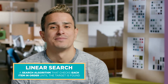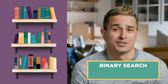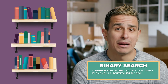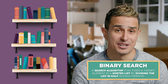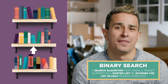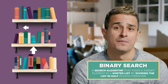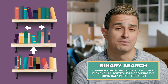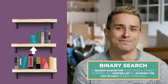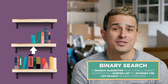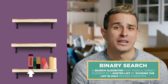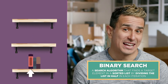We could try doing a binary search. A binary search is a search algorithm that finds a target element in a sorted list by dividing the list in half in each iteration. We first start by checking the book in the middle. Then we know if the book we're looking for comes before or after the book we picked up. This eliminates half the books we need to check. Then we can start at the middle of the books that remain. With this strategy, we can find the book we're looking for much faster.